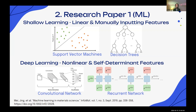Support vector machines (SVM) and decision trees (DT) are two main methods in traditional machine learning for classifying data based on features. SVM uses a linear approach to separate data points into different groups using a hyperplane, while DT creates rules from training data to classify examples. Both SVM and DT entail manual selection of features, where important characteristics are chosen to improve classification accuracy, as seen in studies using SVM for classifying compounds and DT for Heusler compounds.